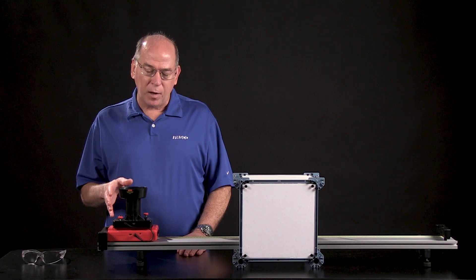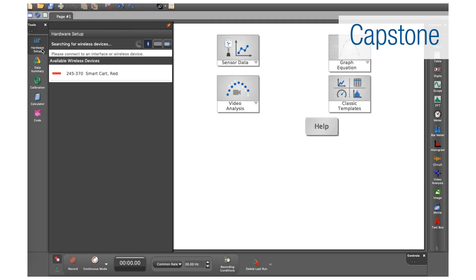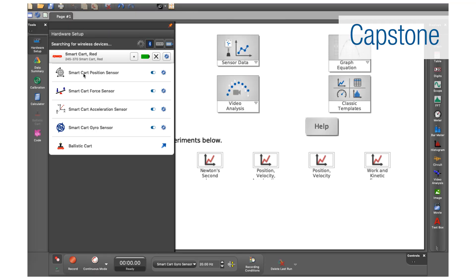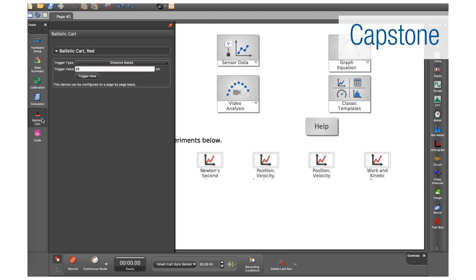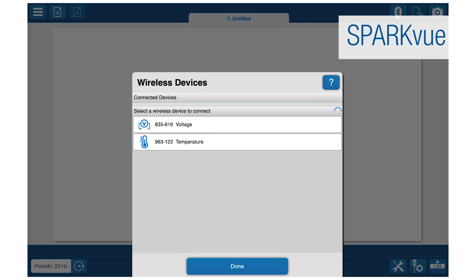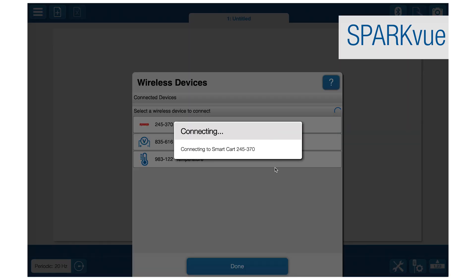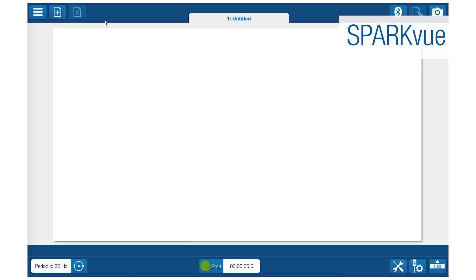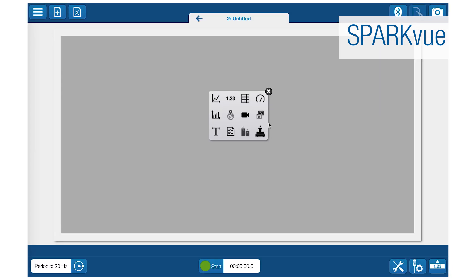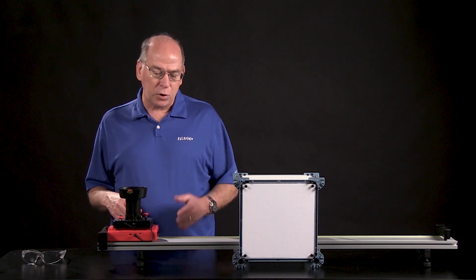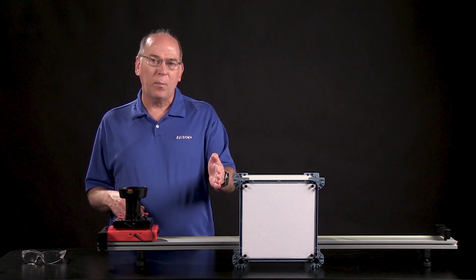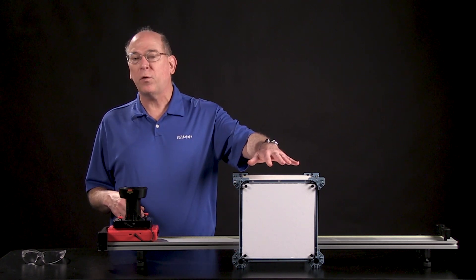And so what I've done is connected it to either Capstone, our latest version of Capstone, or our latest version of SparkView. That gives you a control panel that you can set the release. Instead of by time, you can set it to release by the position of the smart cart. And so this feature is only available on the smart cart. So I've set it to launch after it travels 25 centimeters, which is right before this tunnel.